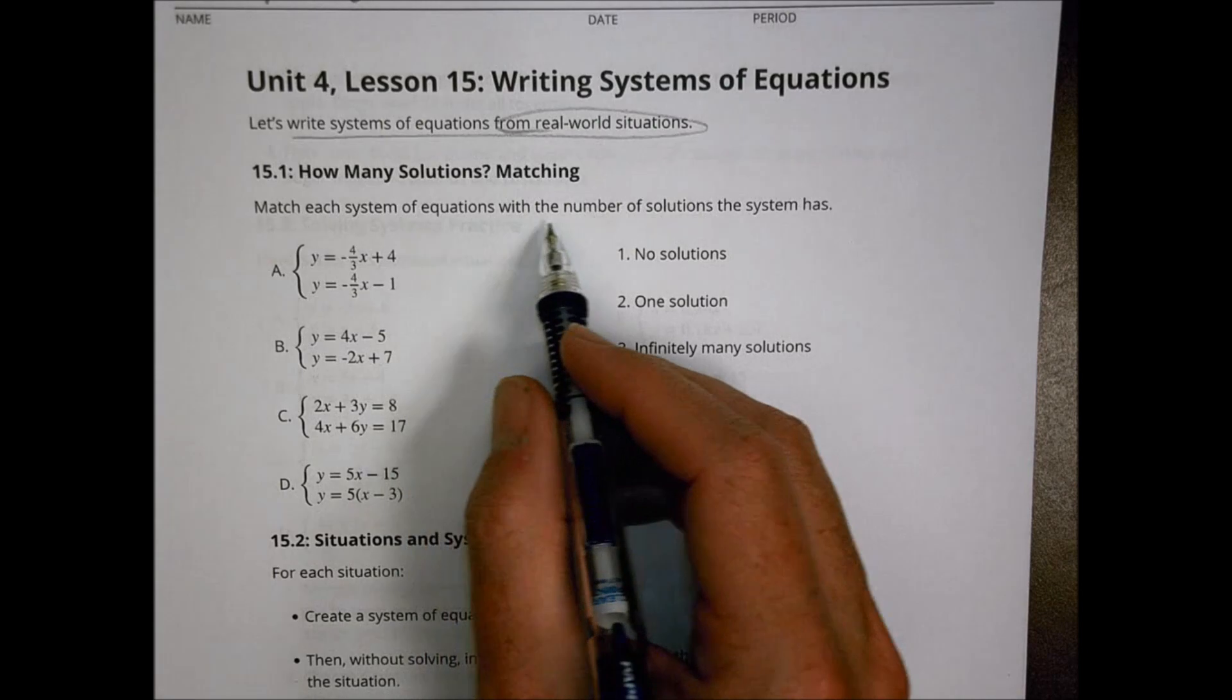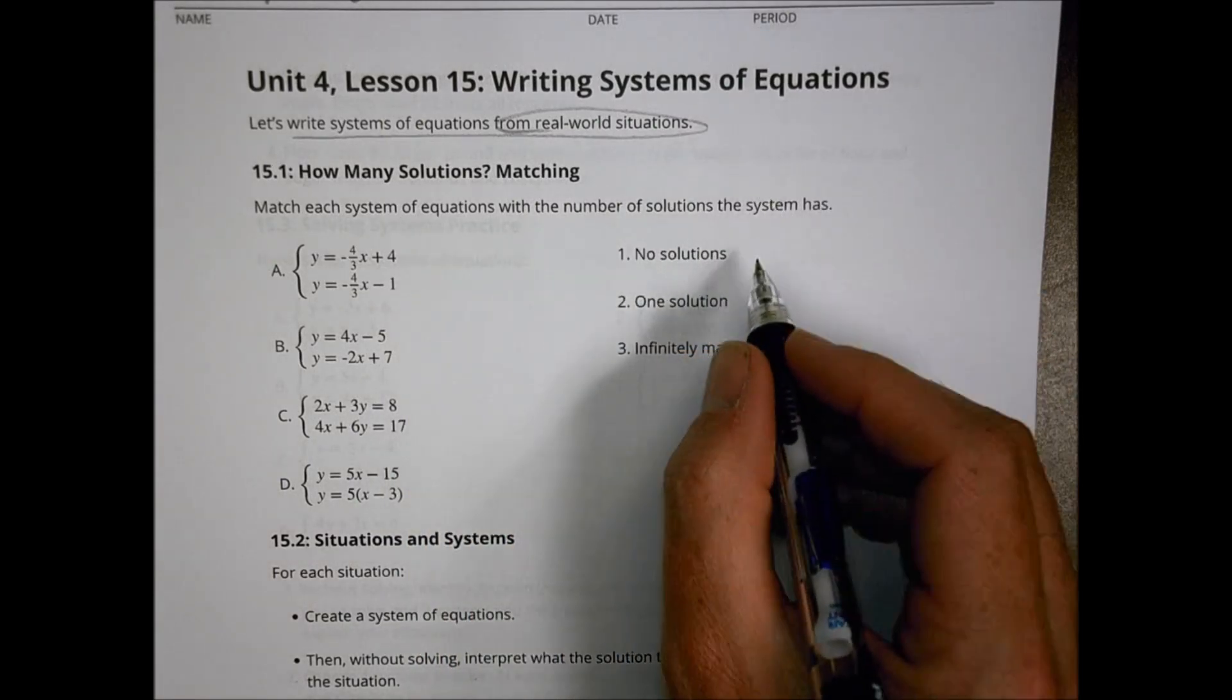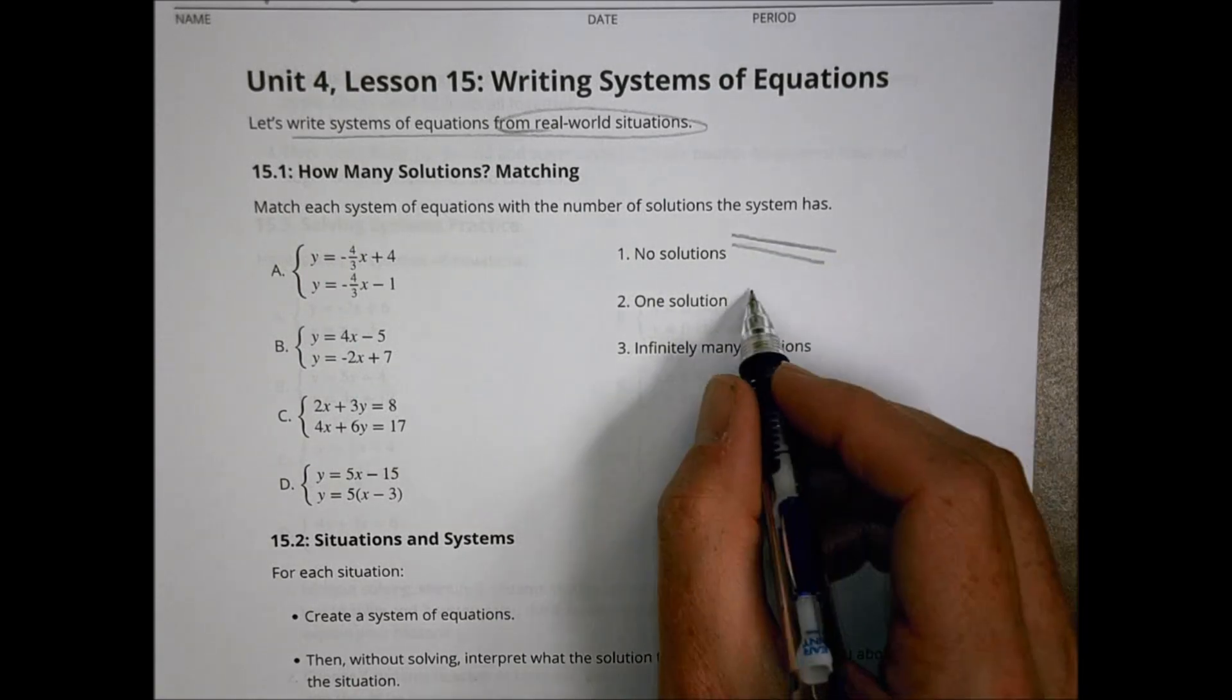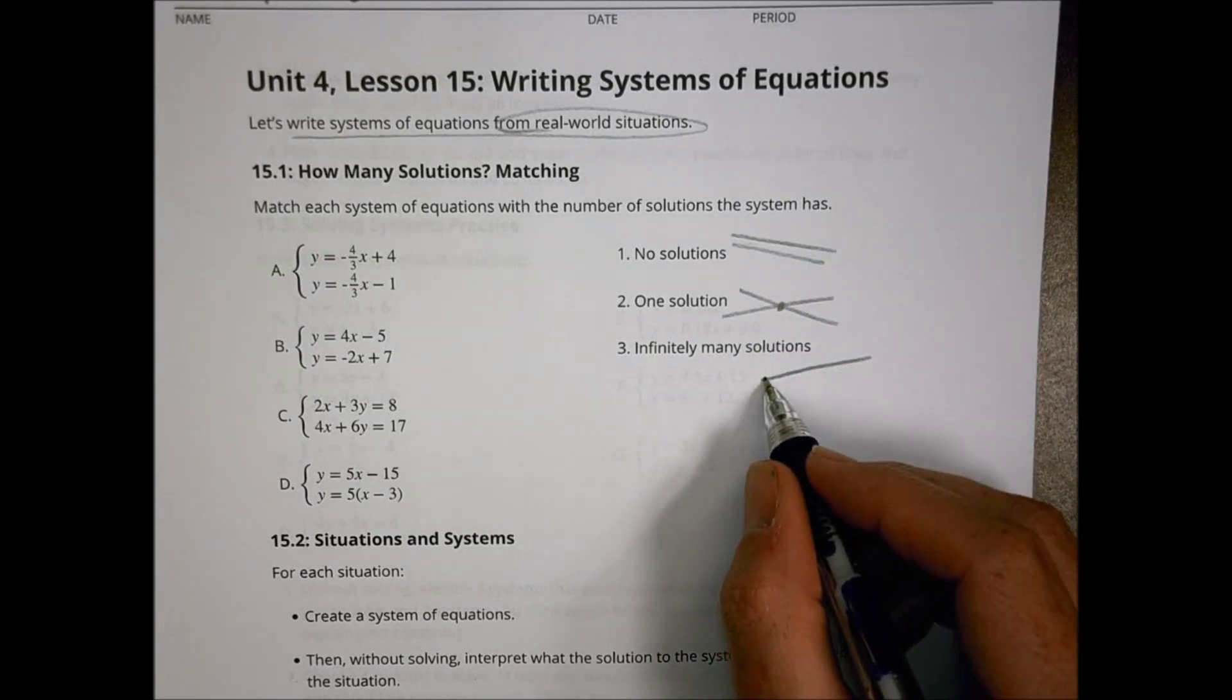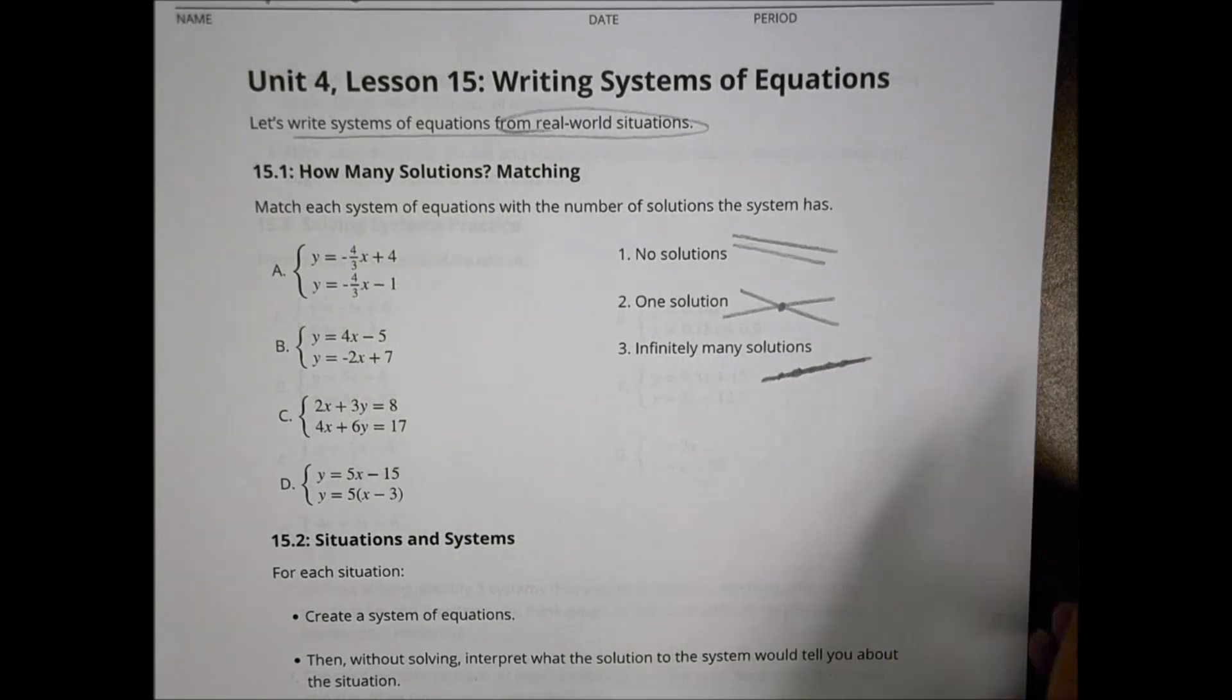First we begin with matching each system of equations with the number of solutions the system has. If it has no solutions, we're talking about lines that are probably running in parallel with each other. If it has one solution, that means they're going to cross at one point. And if it's infinite, we're talking about lines that are stacked on top of each other so that there are points all along the lines that are all possible solutions.